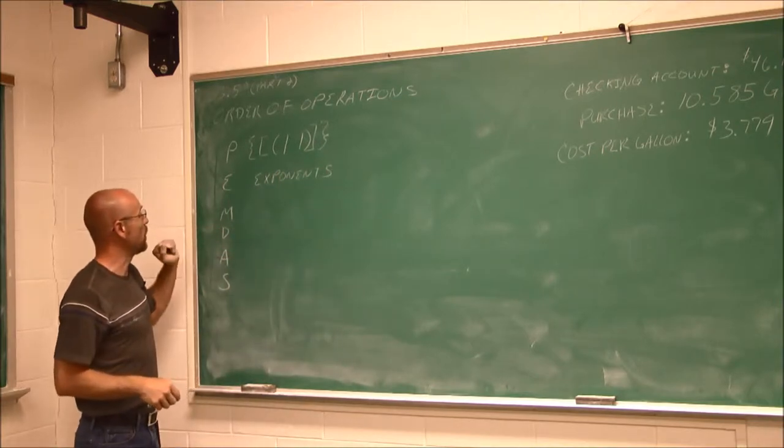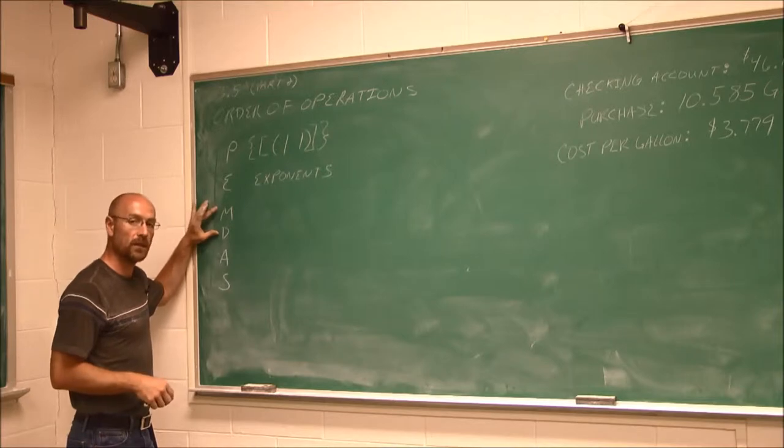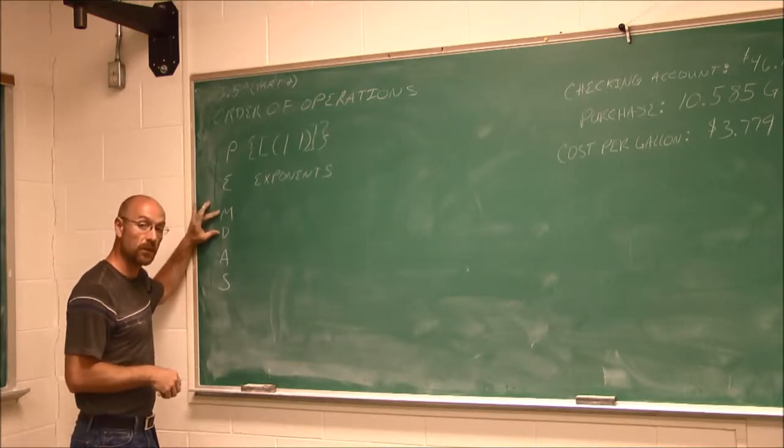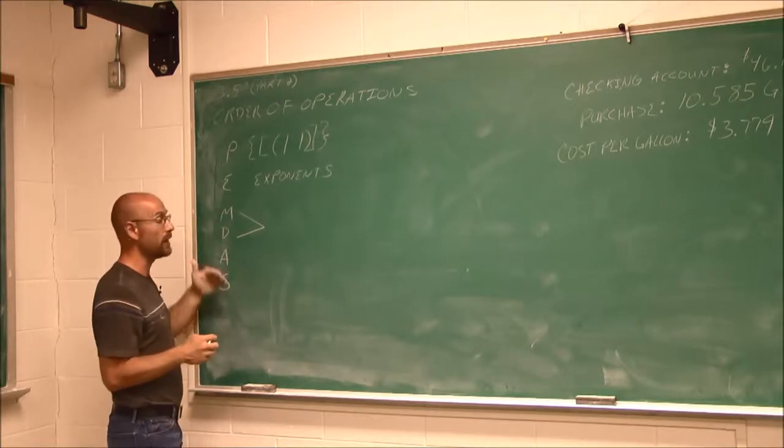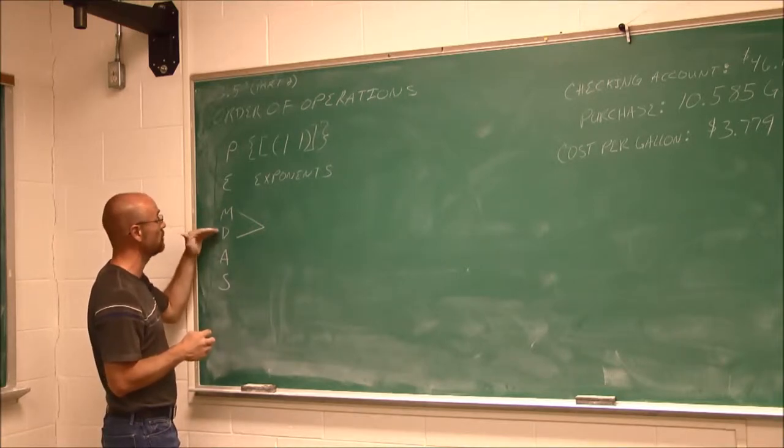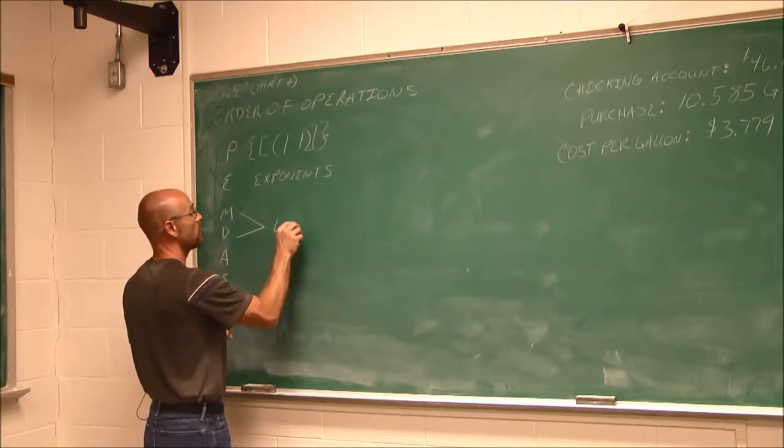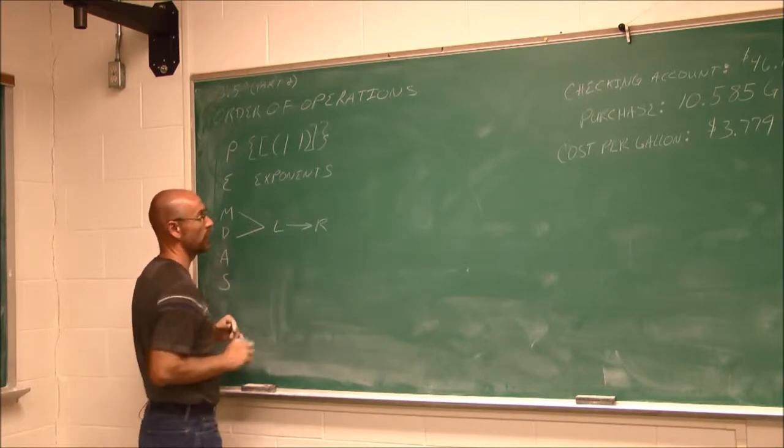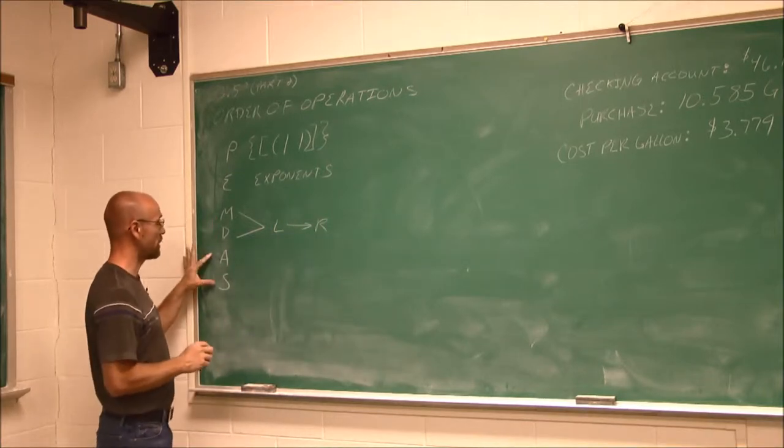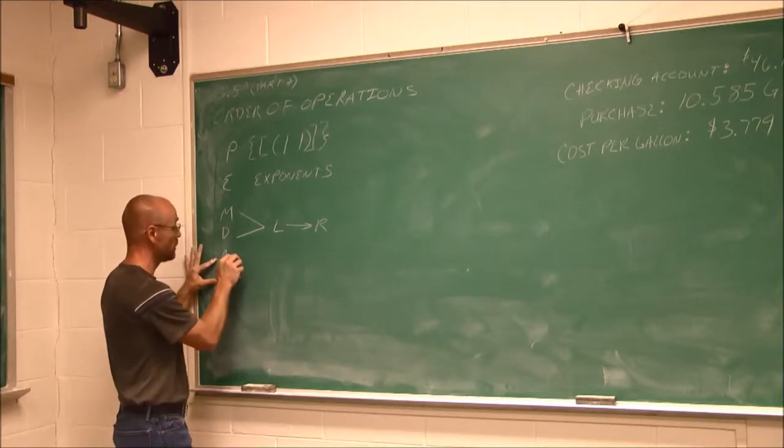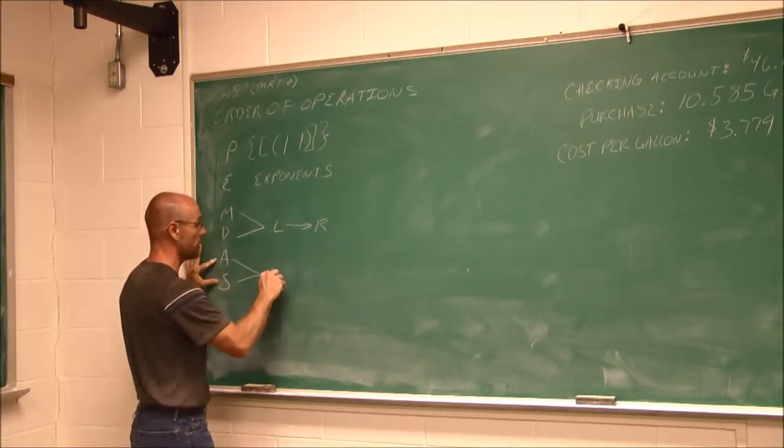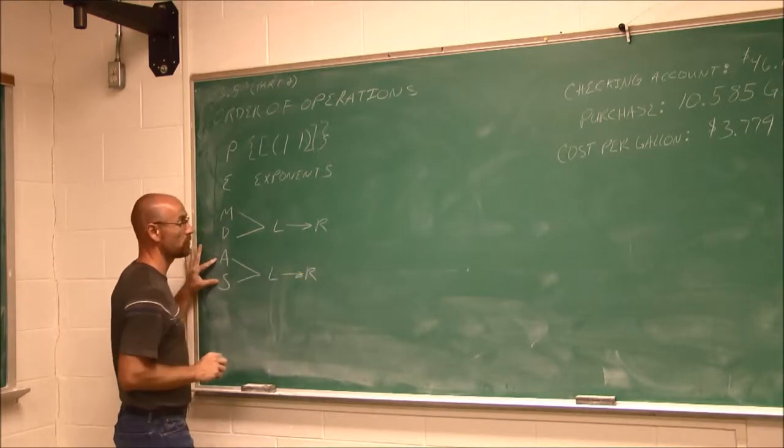The M and D is multiplication and division. These are equal but reciprocal operations, so we do them from left to right, not necessarily multiplication before division. Addition and subtraction are also equal operations of one another. Reciprocal, one will undo the other. We do those from left to right.